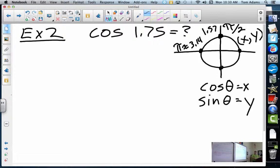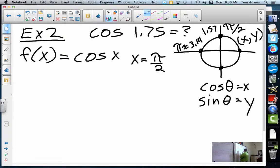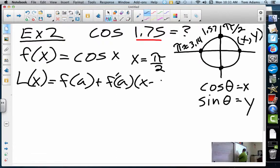So if I wanted to use linear approximation, I might say let's let f(x) equal cosine of x, and let's let x be π/2. So I'm going to set up my linear approximation based on this, and then I'm going to go back into the equation and approximate what my linear function is evaluated at 1.75. To get my linear function, I need f(a) plus f'(a) times (x - a). So we're going to let a be π/2.